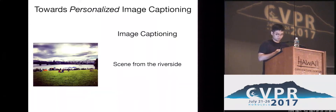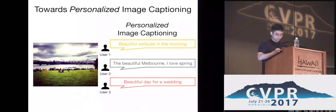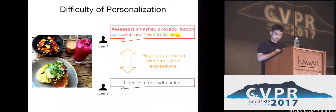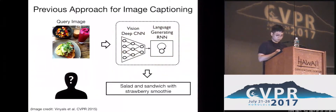Image captioning is a task of generating a descriptive sentence of an image. However, when we actually write a caption, it reflects our personality. As you see in this picture, modeling personalization is very challenging since there is a huge gap between their expressions. Previous image captioning approaches do not try to solve these difficulties — they do not consider the user's personality.